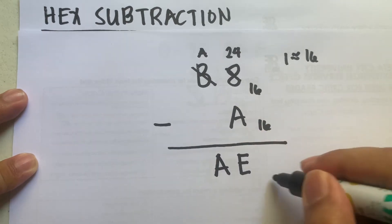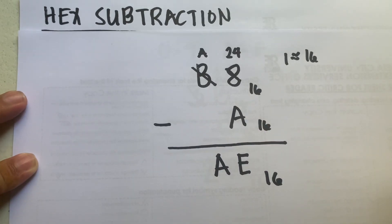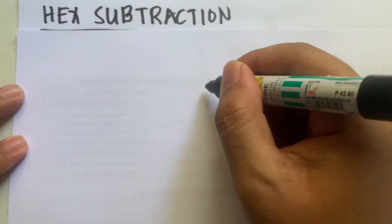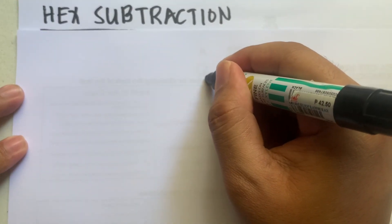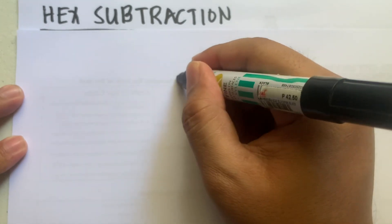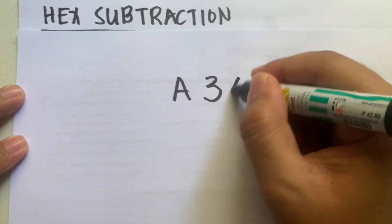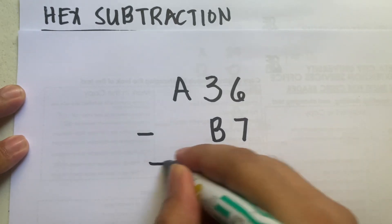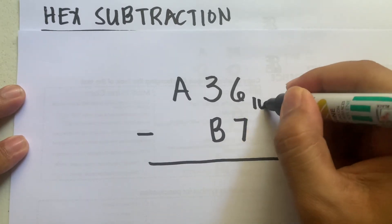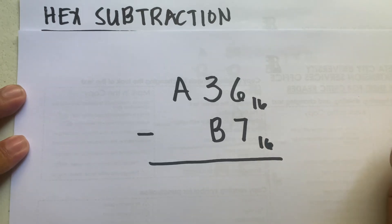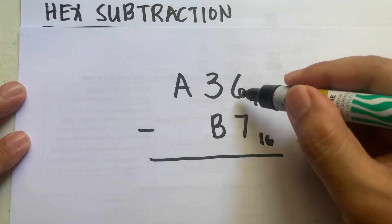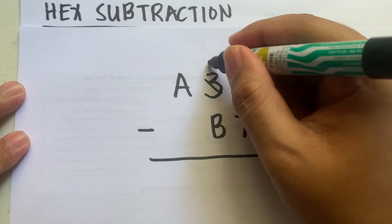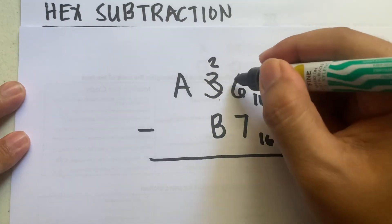Let's have another example of hexadecimal subtraction. Say you are given A36 minus B7. How do we subtract these hexadecimal numbers? We have 6 minus 7, which cannot be done, so 6 will borrow one from 3. 3 now becomes 2, and 6 becomes